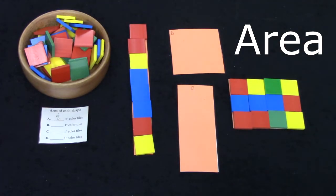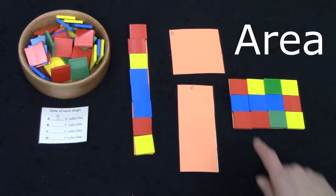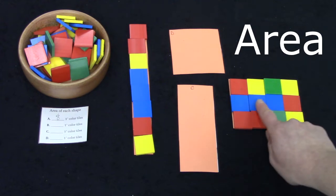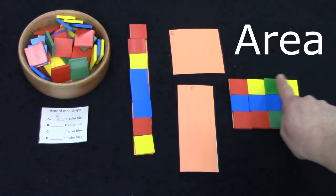Let's count how many tiles the area of this shape is. One, two, three, four, five, six, seven, eight, nine, ten, eleven, twelve.